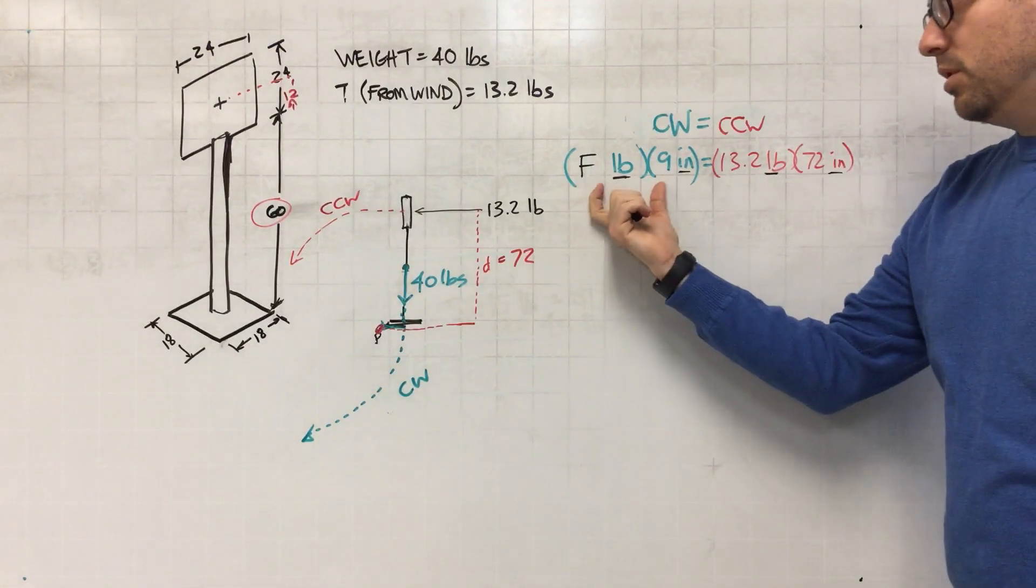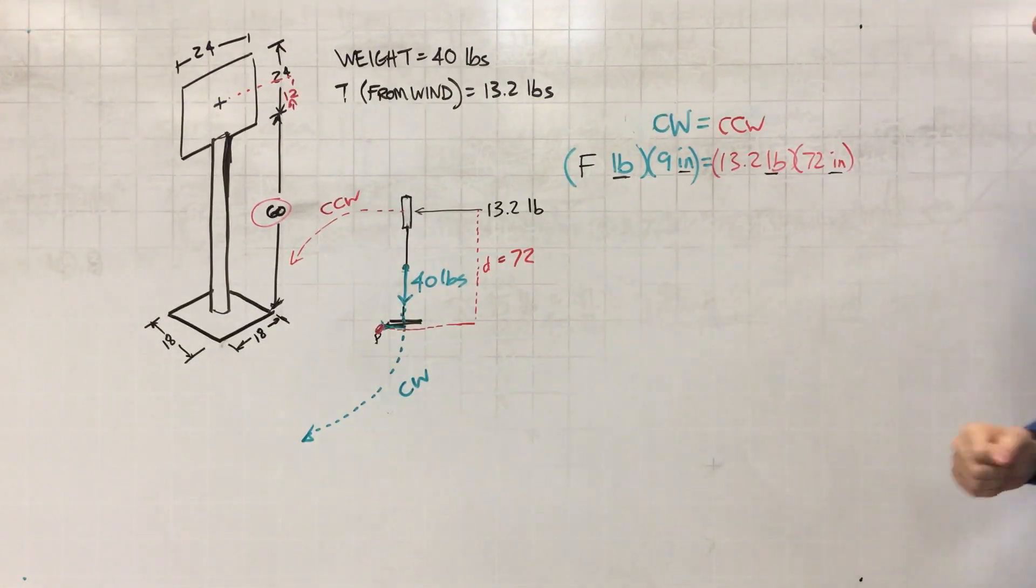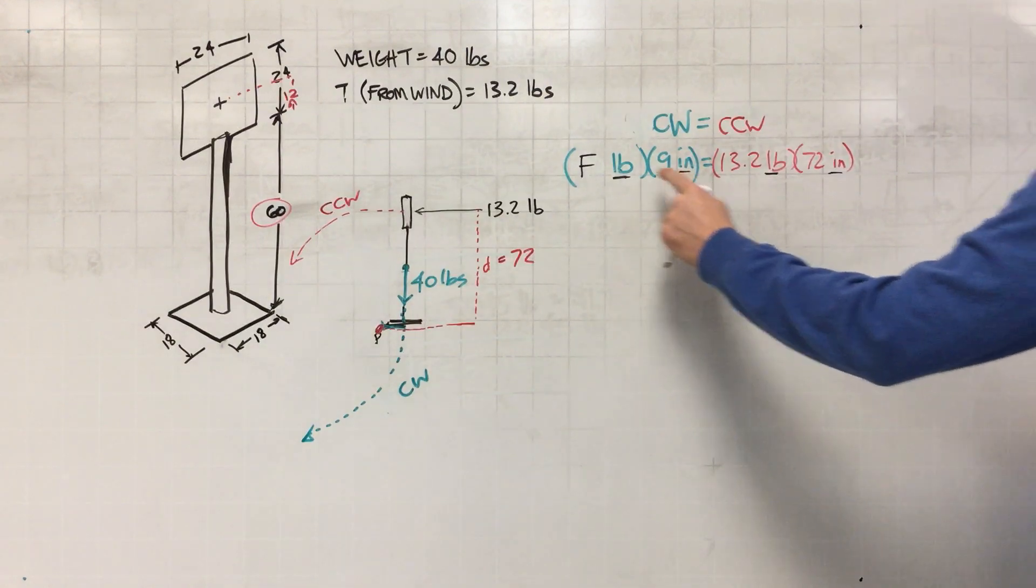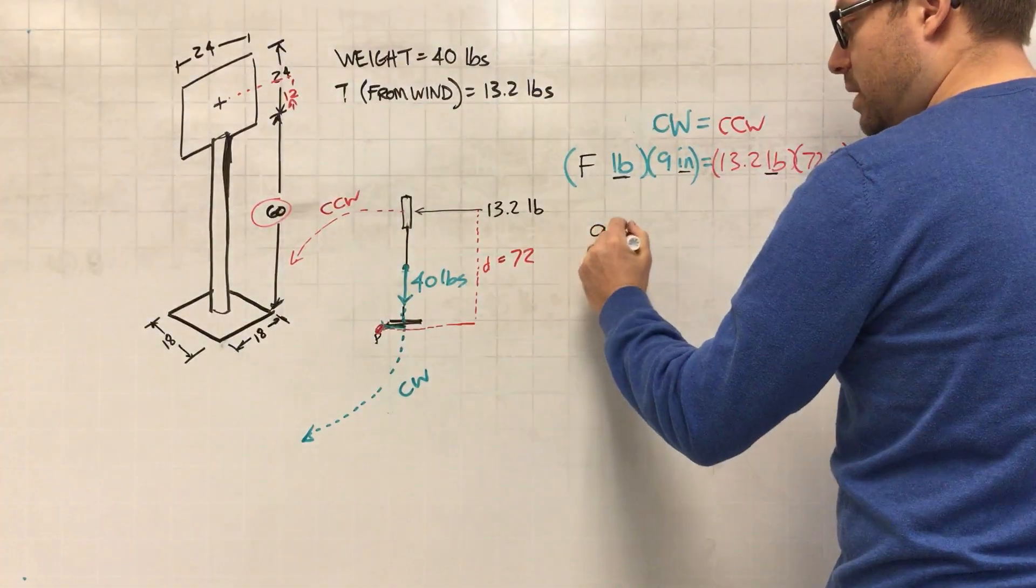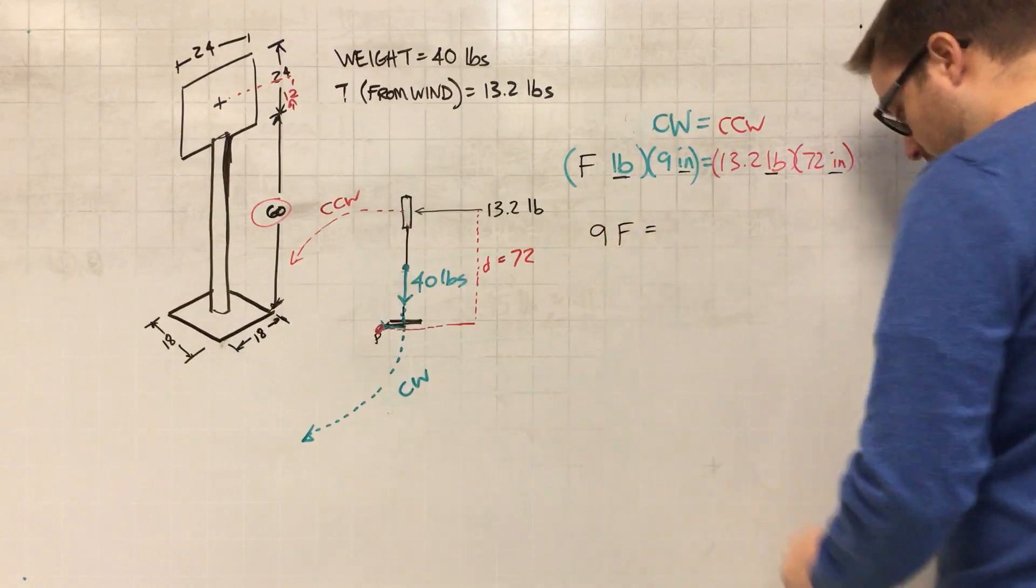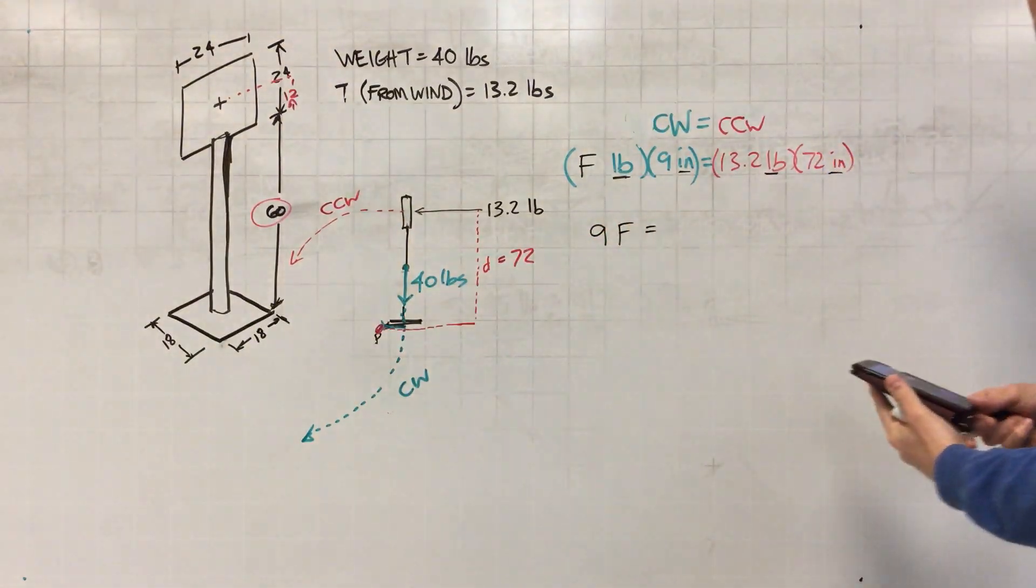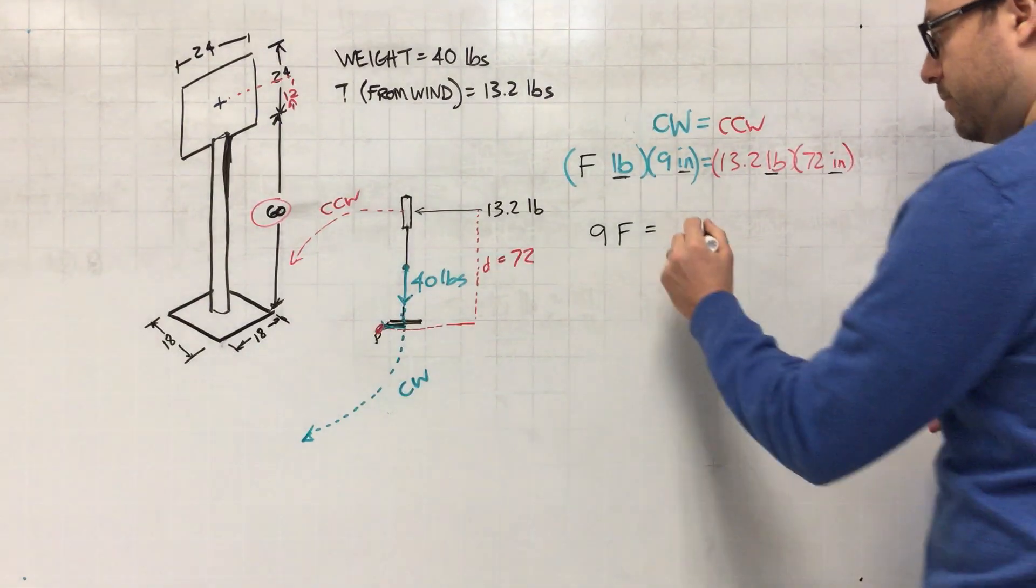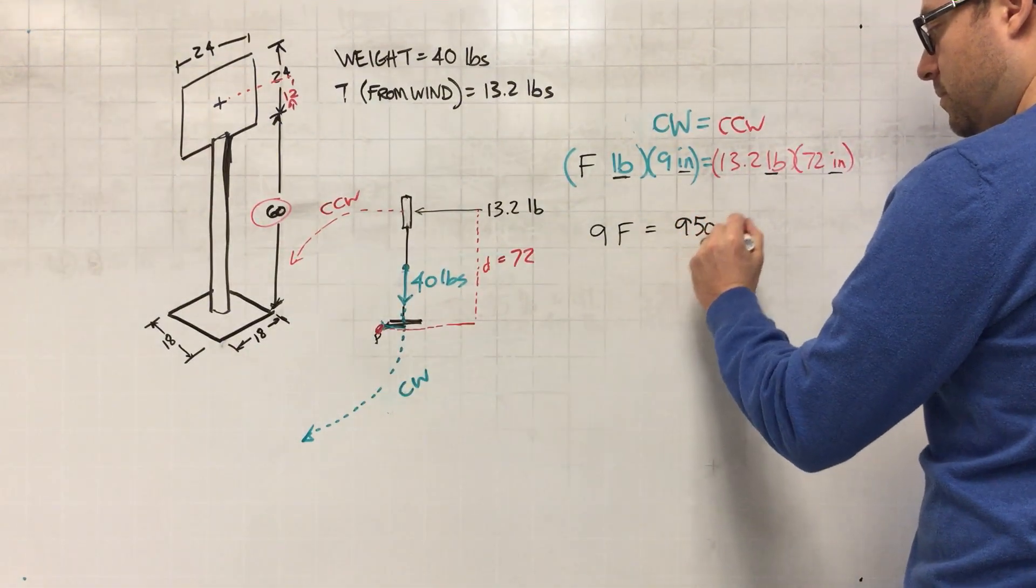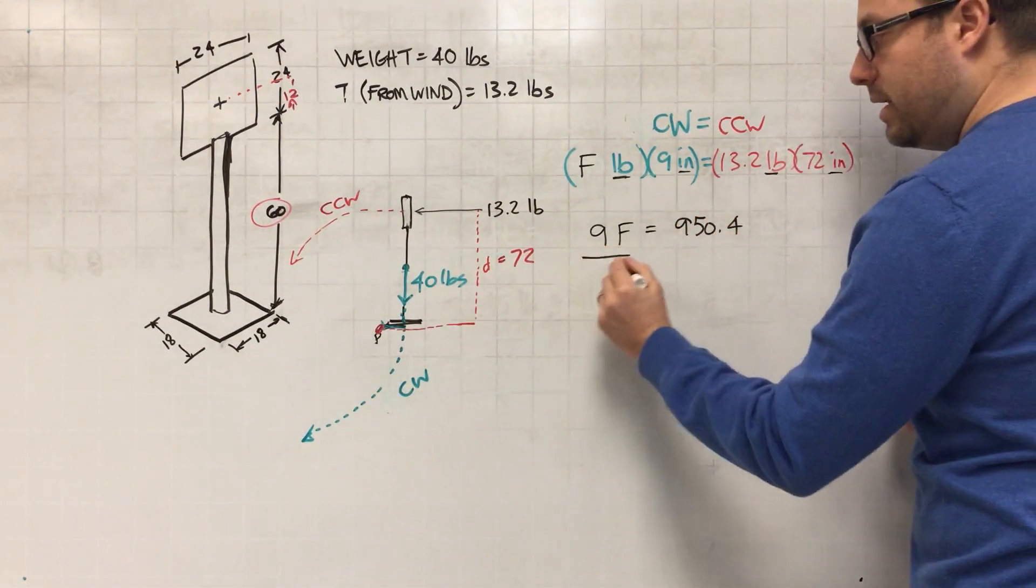Okay, so I'm gonna take then F times 9 equals 13.2 times 72. So I'm just gonna say 9F here. And I already forgot my number here, let's go back to my calculator. If I get 13.2 times 72 that gives me 950.4.